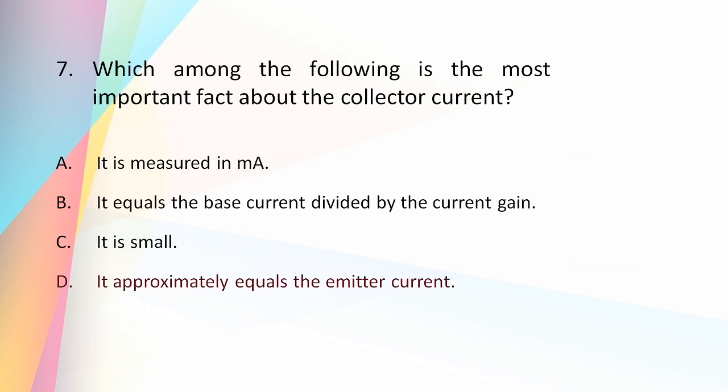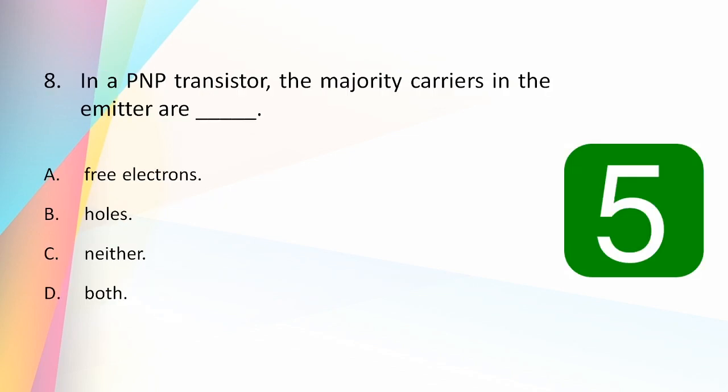The answer is that it approximately equals the emitter current. By applying KCL, the emitter current equals base current plus collector current: IE = IC + IB. Since the base current is very much less than the collector current, it can be neglected, and hence the emitter current can be approximated to the collector current value.